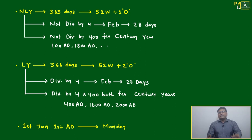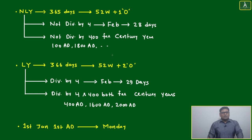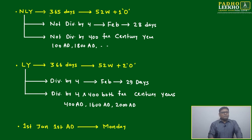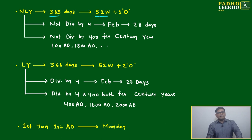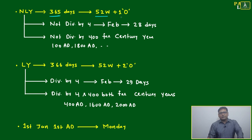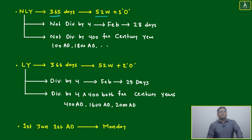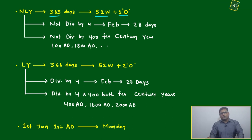A little more concentration is needed here for five to seven minutes; once you understand, it becomes interesting. A non-leap year has 365 days. Dividing 365 by 7 gives quotient 52 and remainder 1 — so 52 weeks plus one odd day. Therefore, any non-leap year has one odd day.